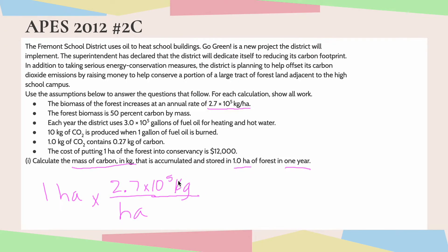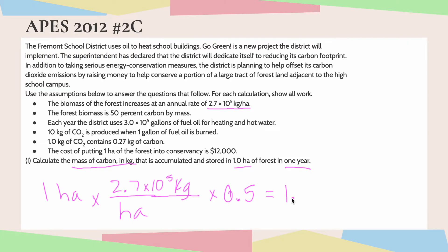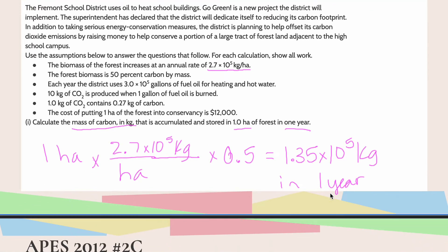Now I have to be careful here because I am in kilograms, but I am not in carbon. So in order to get to carbon, I have to use my second given, which says the forest biomass is 50% carbon by mass. So I'm going to multiply by 50%, which is really just 0.5. Taking half of 2.7, I get 1.35 times 10 to the fifth kilograms, and this is in one year. This is the mass of carbon that is accumulated and stored in one hectare of forest in one year.